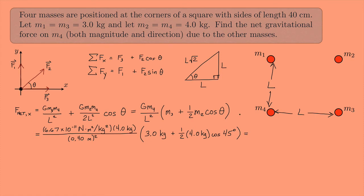And if you do all of this on a calculator, you end up getting 7.36 times 10 to the negative 9 Newtons. That's the X direction.